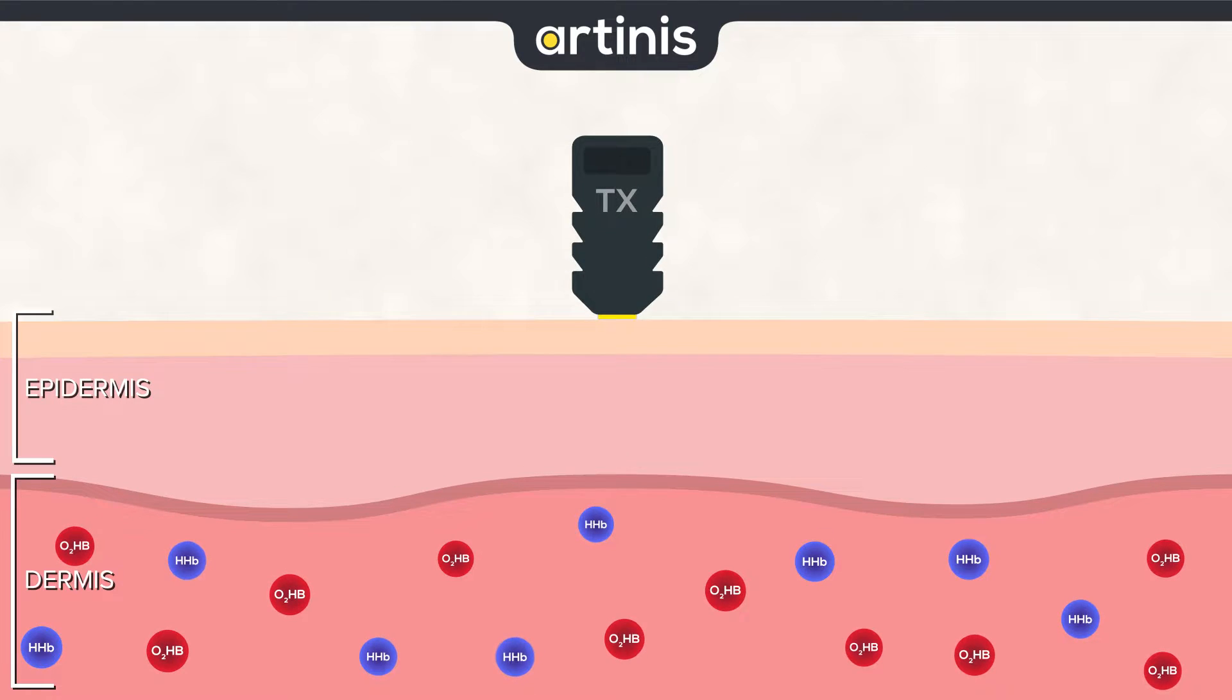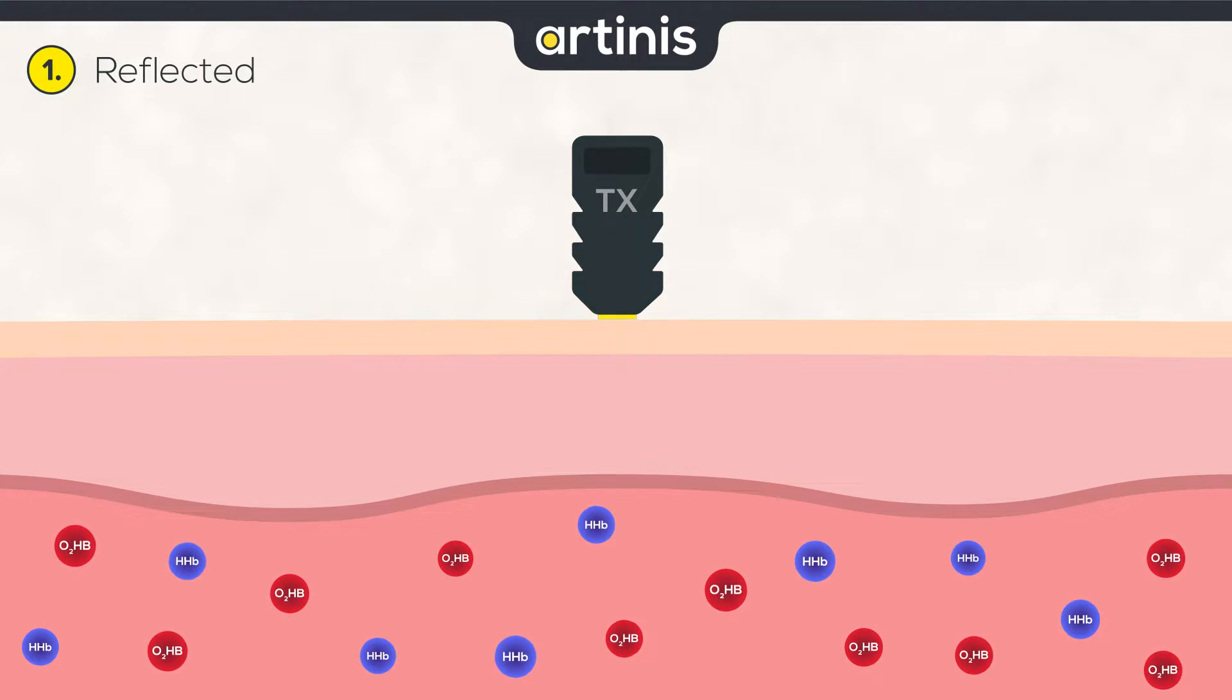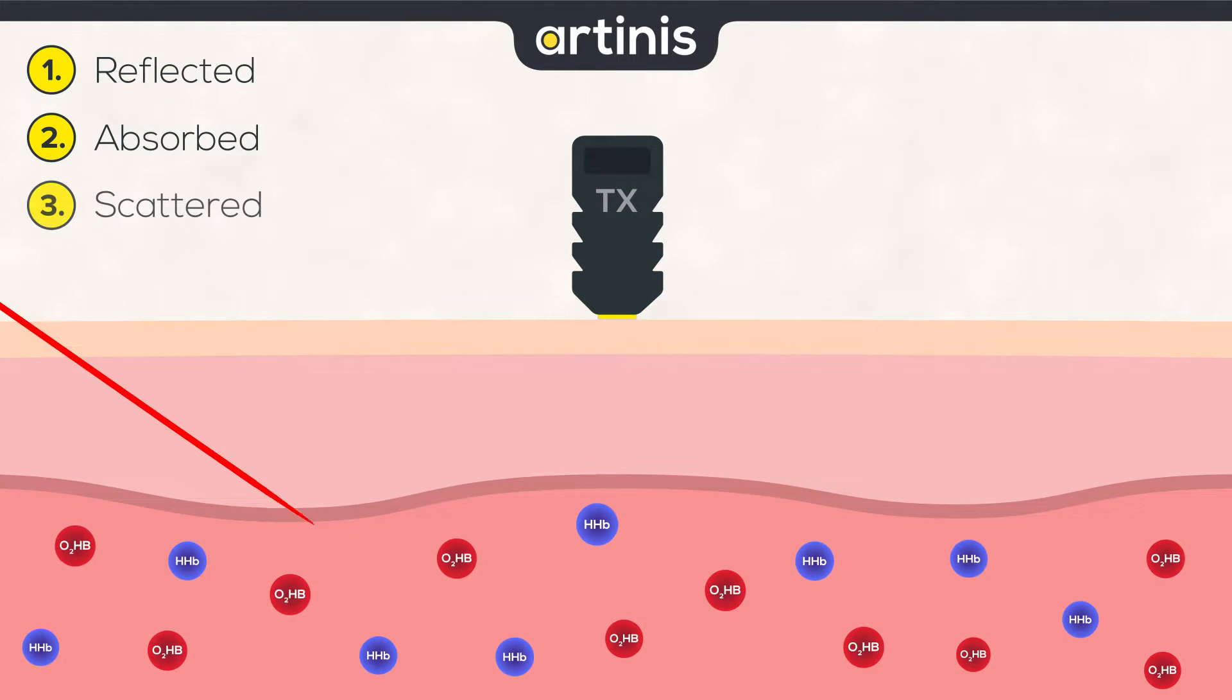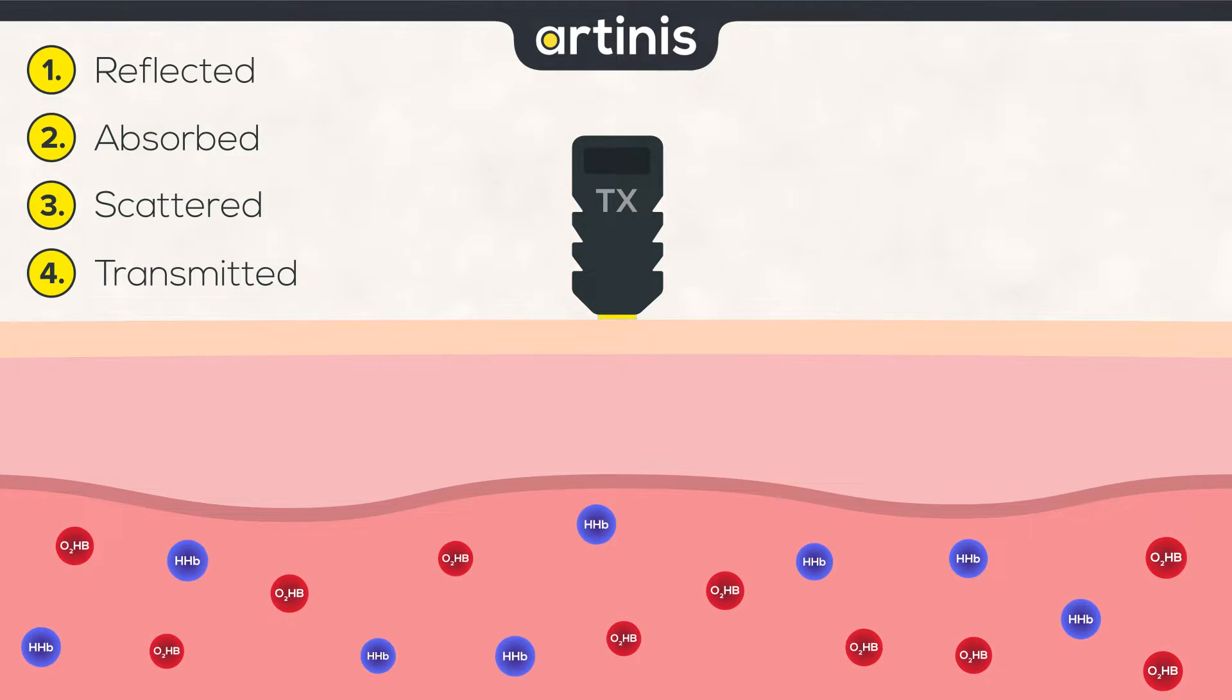When you shine a light in the human tissue, a few things happen. A part of the light is reflected, some light is absorbed, a portion of the light is scattered through the tissue, and finally, some of it is transmitted. It goes through the tissue.